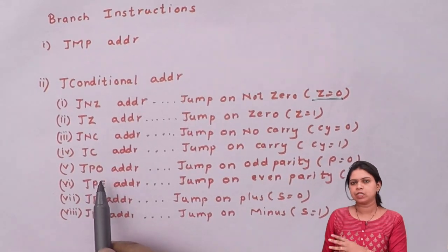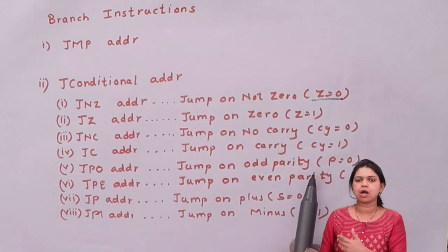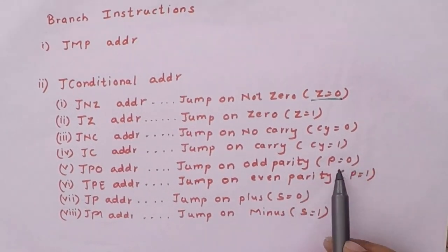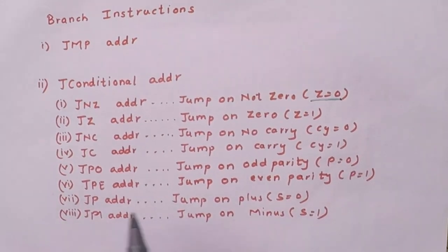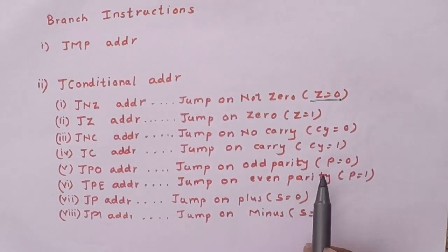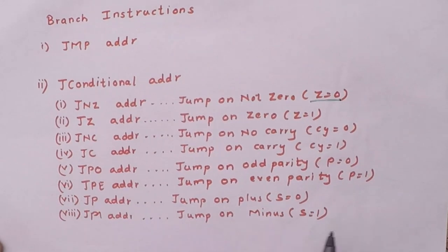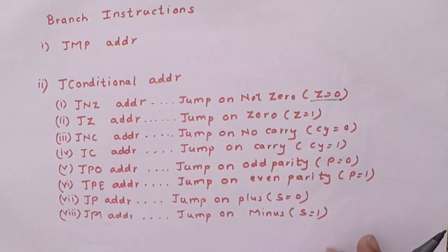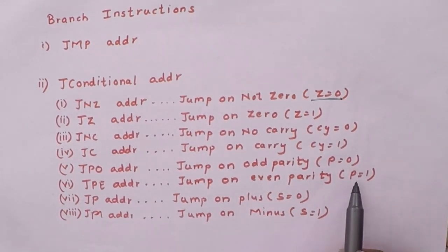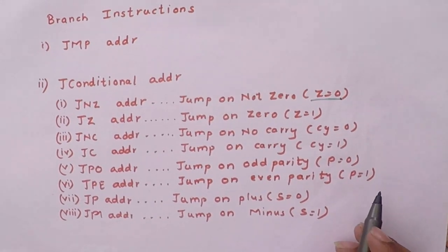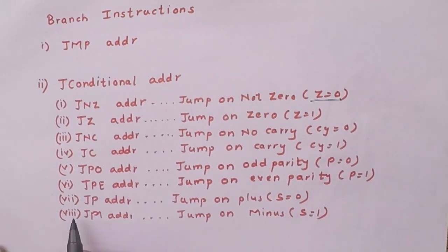JPO is jump on odd parity. As we know, odd parity means your parity flag is set to zero. So when your parity flag is zero, you will jump onto some address. JPE is jump on even parity. Even parity means your parity flag will be one. So if your P flag is one, then you will jump onto some address.